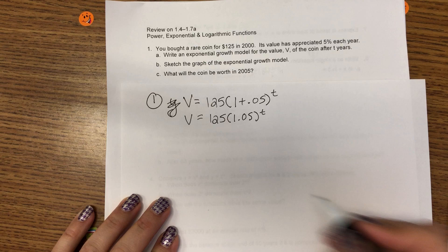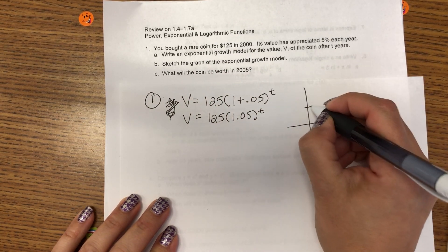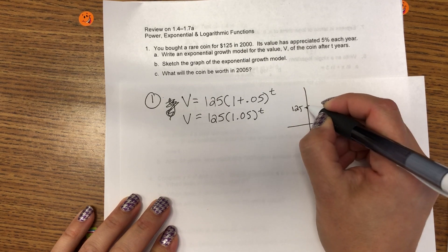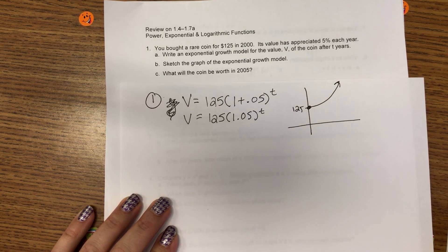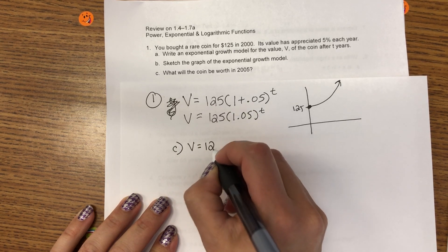I'm going to add the 1 plus percent to get my answer for A. Part B, sketch a graph. My initial value is 125, and it's exponential growth.